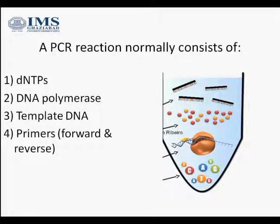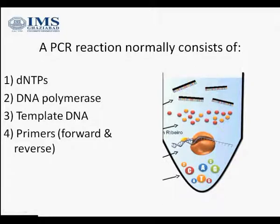Hello students. In this video we are going to discuss the basic components of a PCR reaction. The normal reaction mix consists of dNTPs, DNA polymerase which is the enzyme, the template DNA on which the synthesis has to take place, and we have the primers — forward and reverse primers.